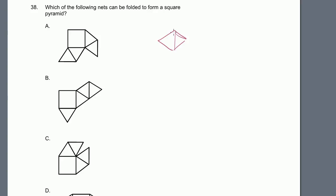Problem 38. Which of the following nets can be folded to form a square pyramid? A square pyramid has a square as its base, like the pyramids in Egypt. Looking at choice A: if I fold this flap up and then this one up, this other flap won't fill in correctly — it will just recover the same flap again. So choice A is not correct.